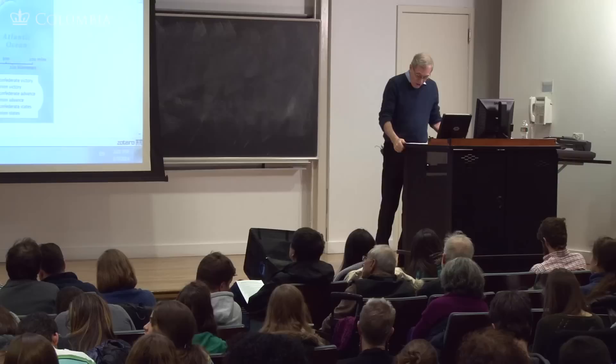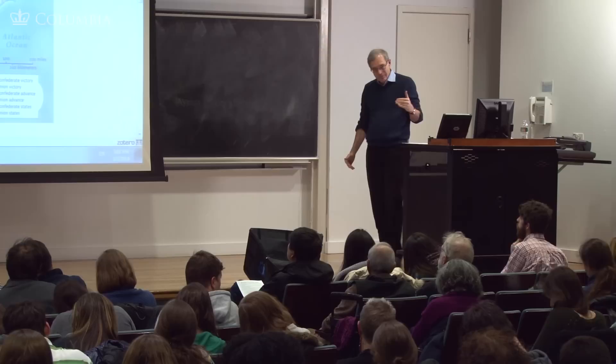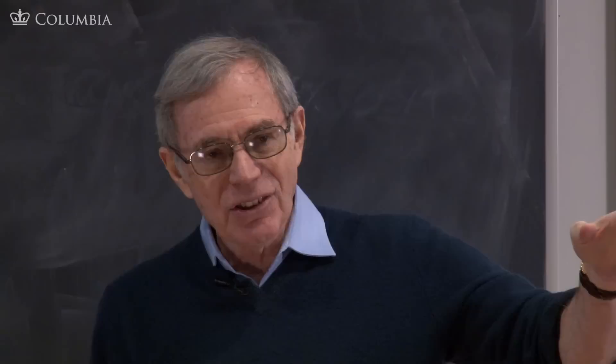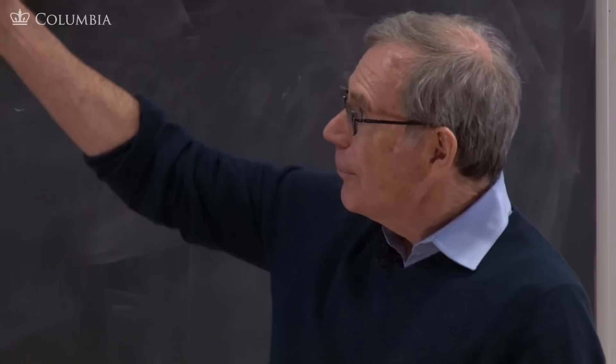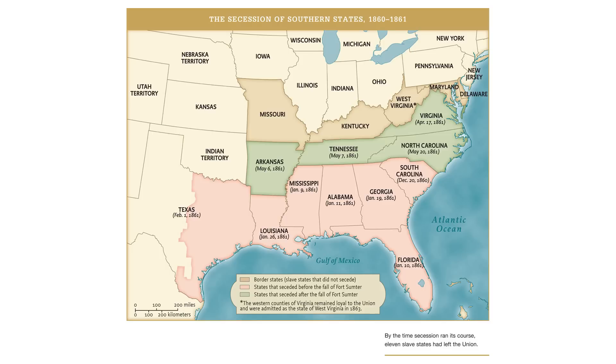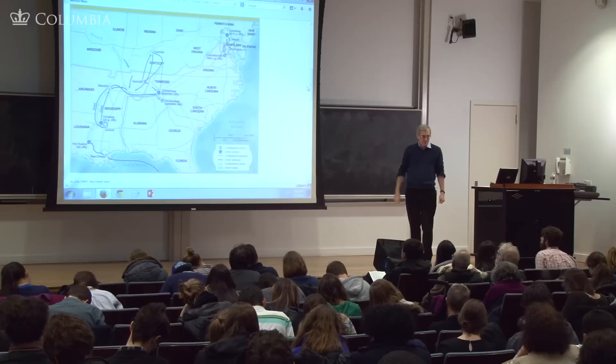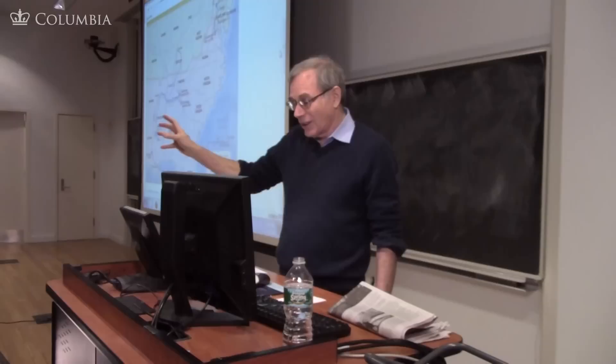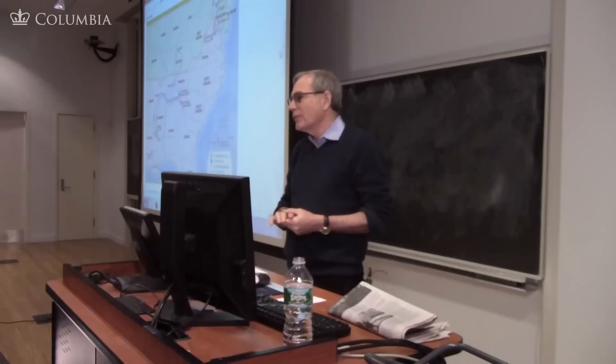Four slave states remain in the Union — the so-called border states. There were 15 slave states in 1860; now 11 of them have seceded. The four border states, about which we will hear a lot in the Civil War, are Delaware, Maryland, Kentucky, and Missouri. Four slave states, but they do not secede. And they become the pivot of a lot of action by both Union and Confederacy in the first couple of years of the war.